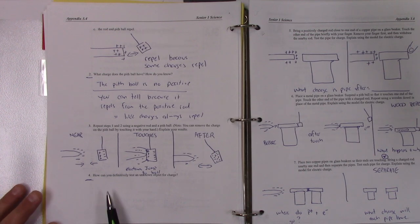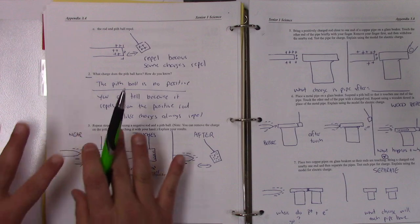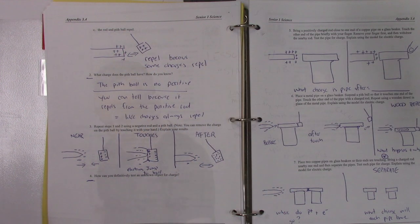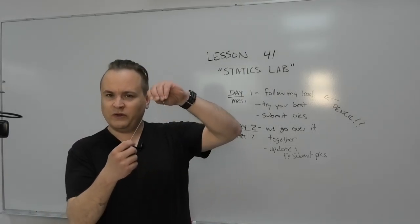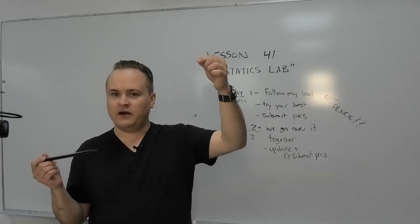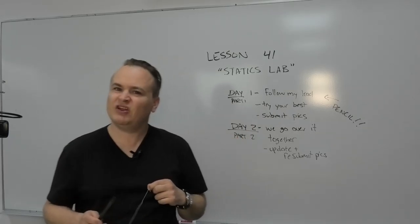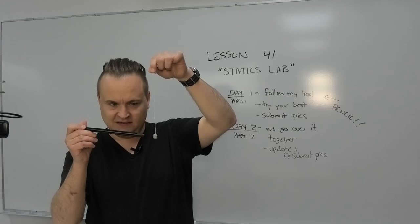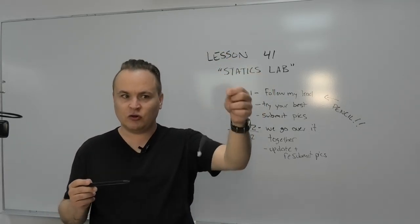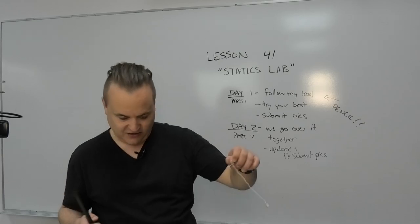Now the hardest, most philosophical question: how can you definitively test an unknown object? Pause if you need to think about it. If you bring a negative rod near an unknown and it attracts, you might say it was positive — but neutral also attracts to negative. So attraction alone doesn't tell you if the object was neutral or positive.